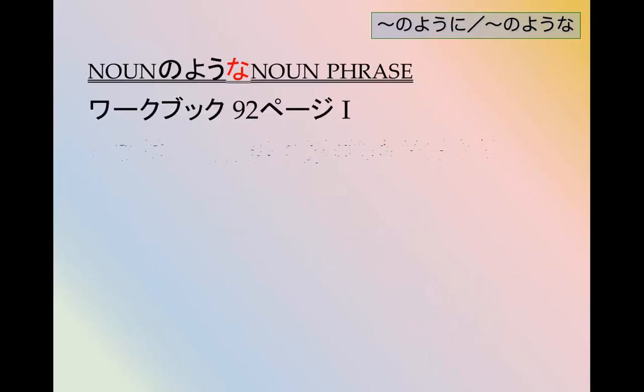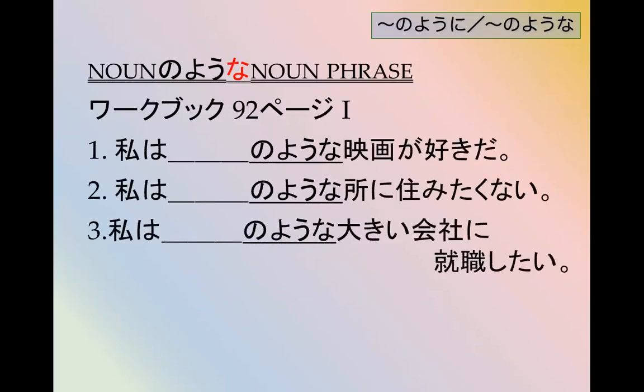Check out the workbook, 92 part 1. わたしは somethingのような映画が好きだ. わたしは die hardのような映画が好きです. わたしはカリフォルニアのようなところに住みたくない. What kind of large company do I want to work at? わたしはGoogleのような大きい会社に就職したい.